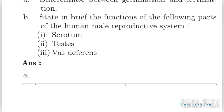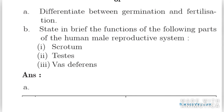Moving on to the next part: differentiate between germination and fertilization. In fertilization, there is fusion of male and female gametes. In germination, the food reserves present in a seed are broken down and the embryo starts to grow. Fertilization occurs in plants and animals, whereas germination occurs in seed plants. Fertilization occurs only after pollination, whereas germination begins when a seed starts to absorb water.